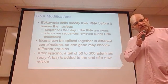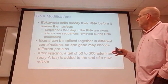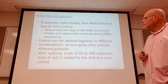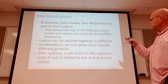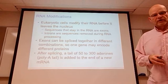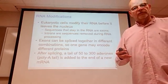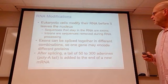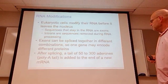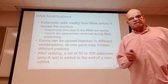Eukaryotic cells modify their RNA before it leaves the nucleus — that's where the unneeded sequences will be removed. Sequences that stay in the RNA are called exons; subsequences that are removed during RNA processing are called introns. If it's allowed to stay it's called an exon; if it's removed it's called an intron. Exons can be spliced together in different combinations, so one gene may encode for many proteins.